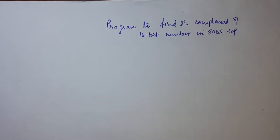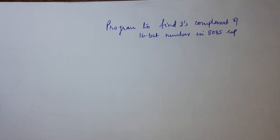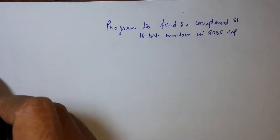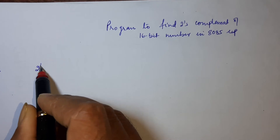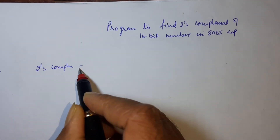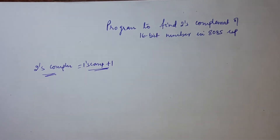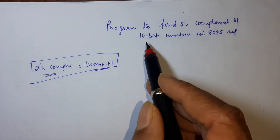In this video I will discuss a program to find 2's complement of a 16-bit number in 8085 microprocessor. I am not discussing 8086 because in 8086 we have an instruction to find 2's complement or 1's complement easily. In 8085, there is no direct instruction, so first you find the 1's complement, then add 1 to get the 2's complement.